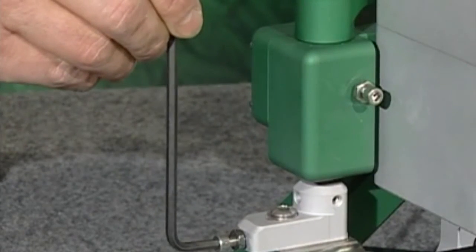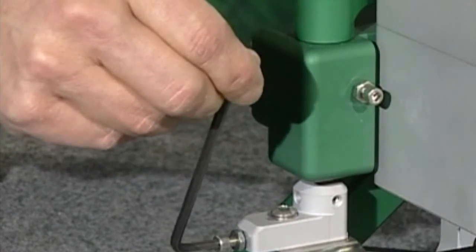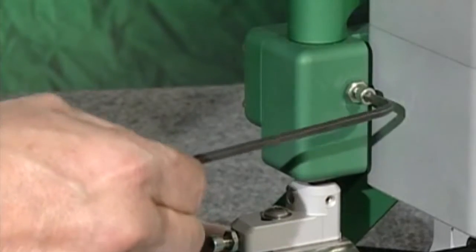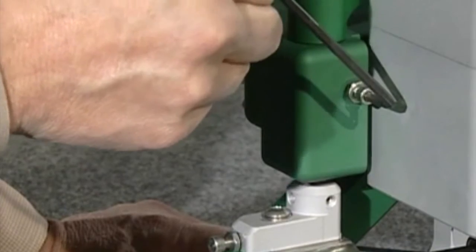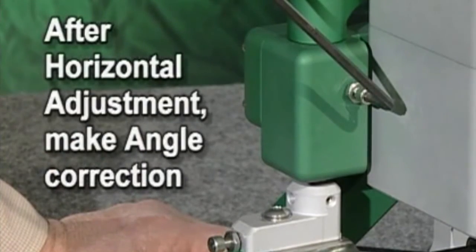Rotate in half turn increments or even quarter turn increments. After each turn, re-tighten the adjustment locking screw and correct the angle alignment.